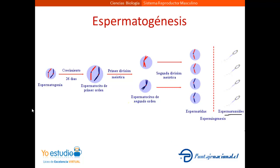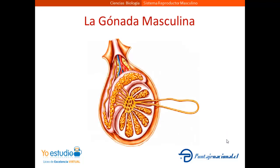Este proceso comienza con una célula llamada espermatogonia y mediante un proceso de meiosis se forman cuatro células especializadas llamadas espermatozoides. La espermatogénesis se produce al interior de la gónada masculina, es decir, el testículo. Específicamente se produce al interior de una red de túbulos seminíferos que se encuentran enrollados en el interior del testículo.